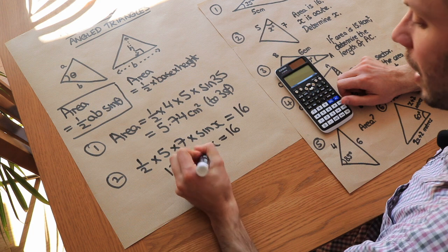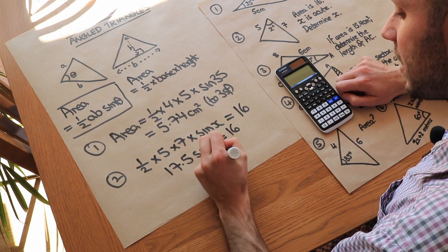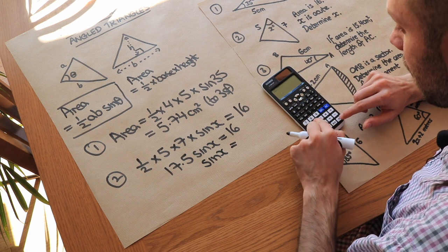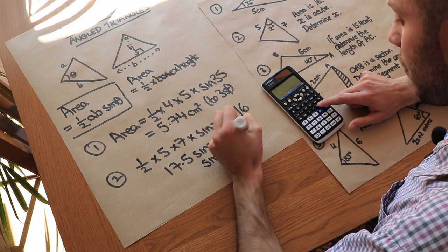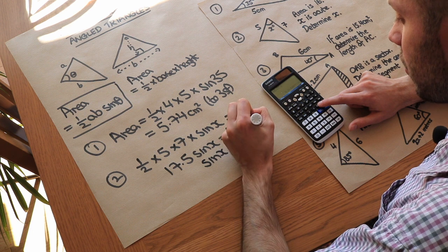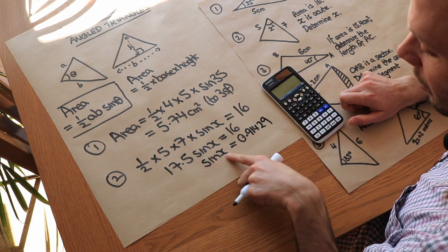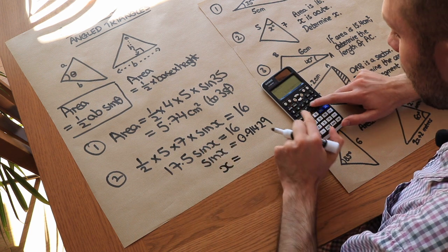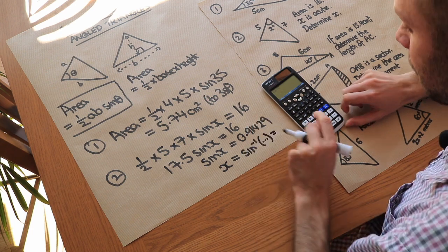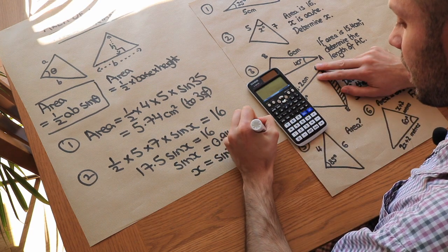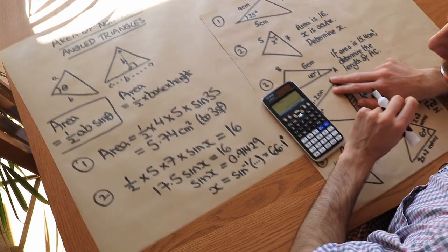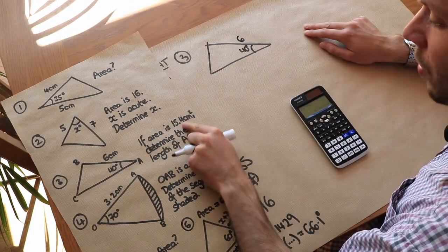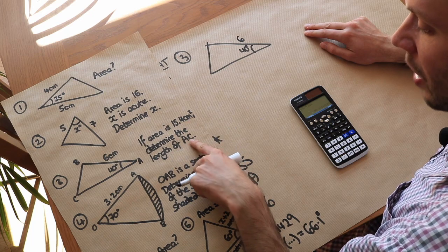Dividing both sides by 17.5 gives sine x equals 0.91429. Then applying inverse sine gives x equals 66.1 degrees to three significant figures.